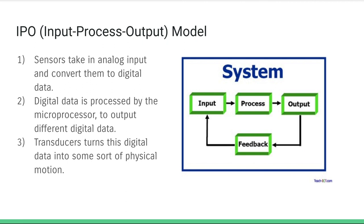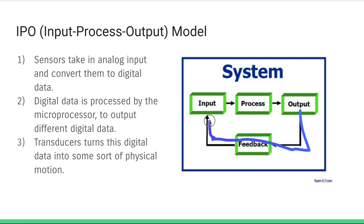Broadly, when we're talking about control systems, we follow an input-process-output model. Sensors take an analog input and convert it to digital data. The digital data is processed by the microprocessor, which outputs a different digital signal to tell our output mechanism what to do. Once that output is received, we may send some feedback back to our sensors, which will continue the process. Transducers are responsible for turning digital data into physical motion at both the input and output stages.